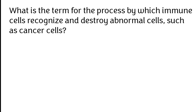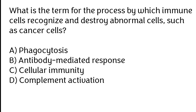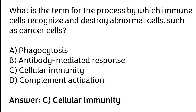What is the term for the process by which immune cells recognize and destroy abnormal cells such as cancer cells? Phagocytosis, antibody-mediated response, cellular immunity, complement activation. The correct answer is option C. Cellular immunity is the term for the process by which immune cells recognize and destroy abnormal cells such as cancer cells.